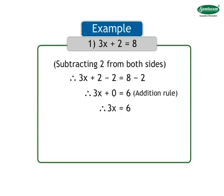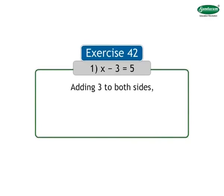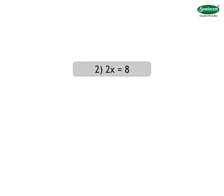Let us solve exercise 42. 1. x minus 3 is equal to 5. If the sign is plus for the constant, you will have to subtract that constant from both sides. And if the sign of constant is minus, you will have to add that same constant on both sides. Therefore, here we will add 3 to both sides of the equation. By addition rule, we get x minus 3 plus 3 is equal to 5 plus 3. We get x is equal to 8. 2. 2x is equal to 8. Since 2x means 2 into x, we should use the opposite sign of multiplication, that is divide. Divide both sides: 2x divided by 2 is equal to 8 divided by 2. We get x is equal to 4. 3. A divided by 3 is equal to 7. Since the sign is division, we will use the opposite sign, that is multiply. Multiplying both sides by 3, we get a is equal to 21.